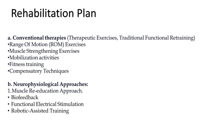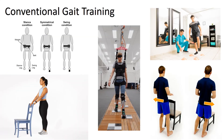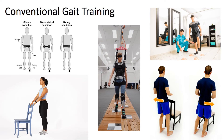People living with hemiplegia usually undergo a combination of rehabilitation therapy. The rehabilitation process includes conventional gait training, which involves breaking down parts of the gait cycle, training and improving the abnormal parts, then reintegrating them into ambulation to return to a more normal gait cycle.